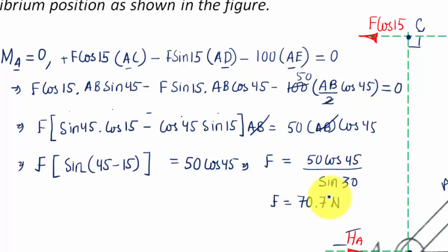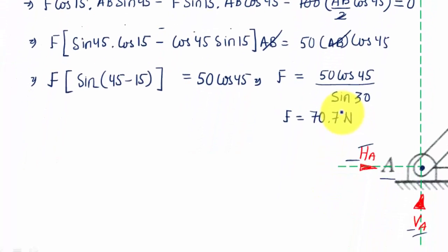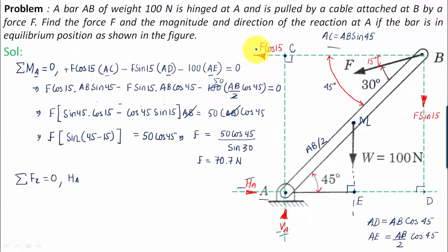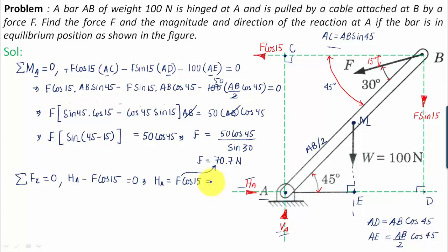Now applying the second equation of equilibrium, summation of forces in the x-direction equals zero: HA − F cos 15 = 0. Therefore HA = F cos 15. With F = 70.7 Newtons, this gives HA = 68.3 Newtons.